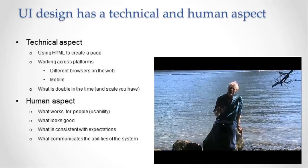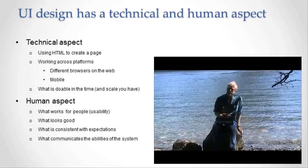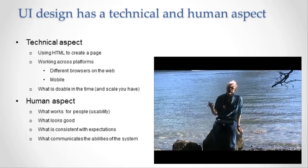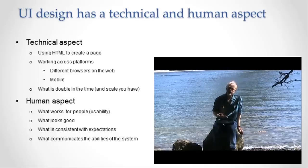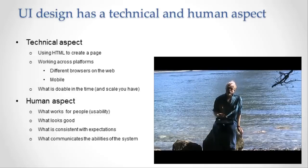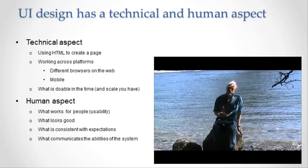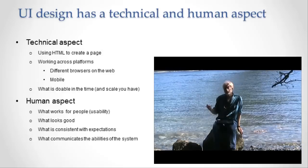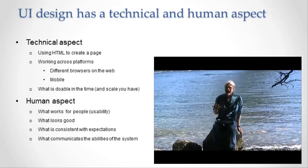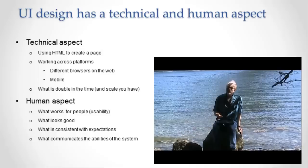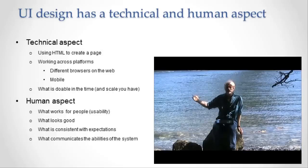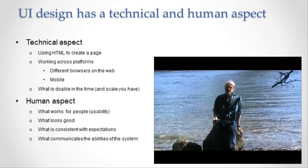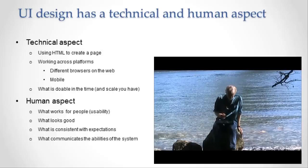So those are the human aspects of user interface design. There are technical aspects all about the constraints and how we meet them. There are human aspects all about how we communicate with the people using this application — how we get them to know what they can do, be happy to do it, be easily led from feature to feature, and be attracted to our application as well.